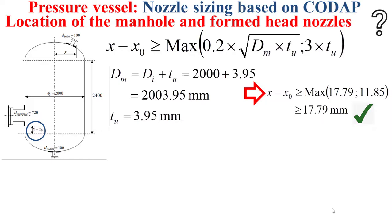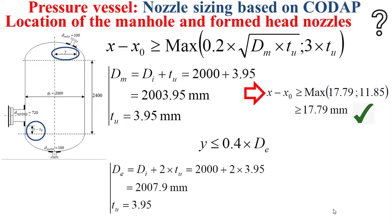x0 is a distance related to the dimensions of the reinforcement plate, as I explained in previous educational videos. Now for the distance y that should encompass the whole nozzle carried out in the formed head — with regard to the axis of the pressure vessel — this distance y should not exceed 0.4 multiplied by the external diameter of the shell, which is equal to the external skirt of the pressure vessel. Based on the internal diameter and the useful thickness of the shell, we can easily determine that this distance y should not exceed 803.16 millimeters.